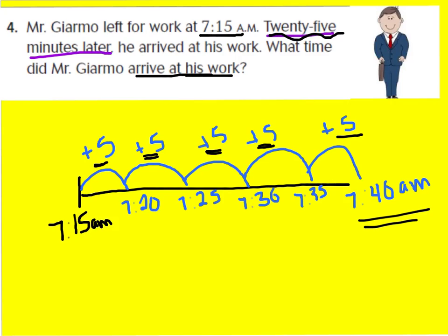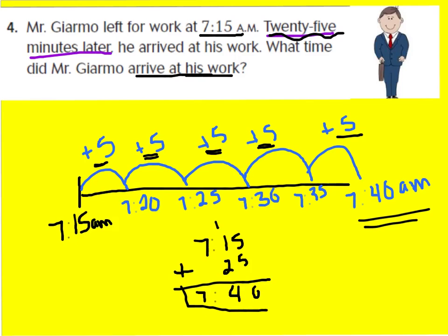I can check this by doing some addition: 7:15 plus 25 minutes. Since we're not passing the hour mark, we can add the minutes directly. 5 plus 5 is 10, and working out the tens: 1 plus 2 is 3, giving 40 — and I bring down the 7. So it works out. His end time was 7:40 a.m.